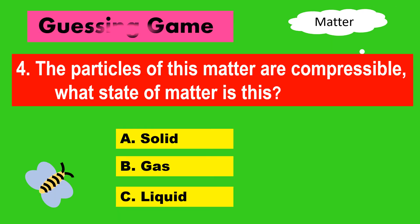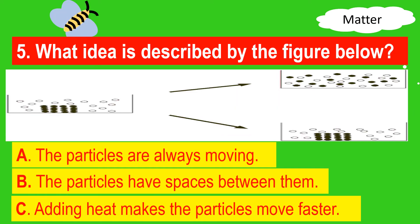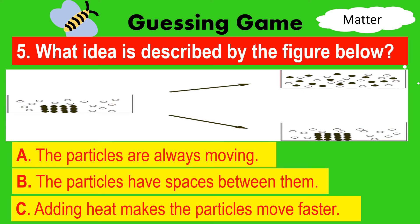Question number four: The particles of this matter are compressible. What state of matter is this? A, solid; B, gas; C, liquid. Question number five: What idea of the particle theory of matter is described by the figure below? A, the particles are always moving; B, the particles have spaces between them; C, adding heat makes the particles move faster.